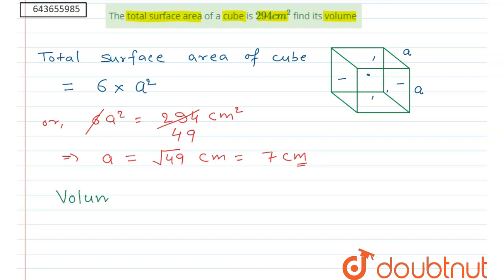volume of a cube equals side cubed. And we know that value of side is 7 cm, so it will be 7 cm cubed.